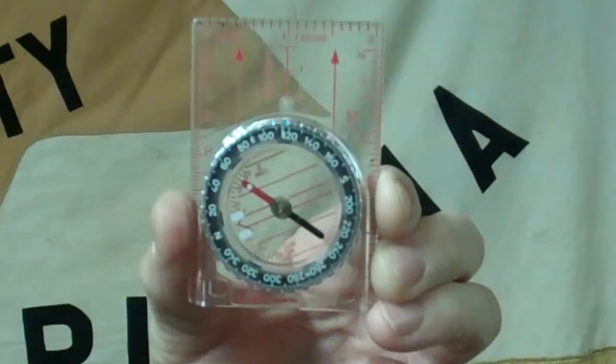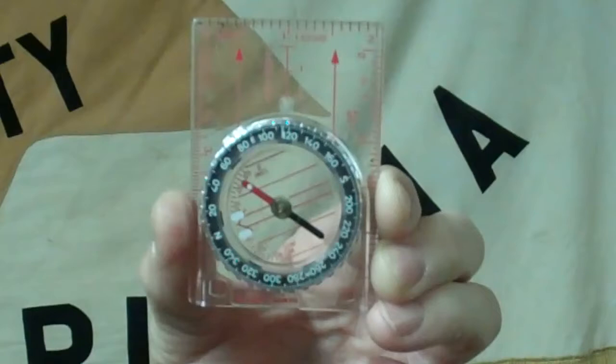And then the last feature on this compass is the index mark shown here. Again, it may be kind of difficult to see on the camera.